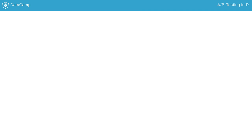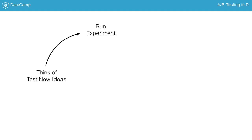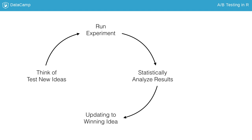Before getting into A-B testing, let's talk about what it is and why it's useful for you. A-B testing is a framework for you to test different ideas for how to improve upon an existing design, often a website. With A-B testing, you're able to take a set of new ideas, test them with a new experiment, statistically analyze the results to confidently say which idea is better, and update your website or app to use the winning idea.